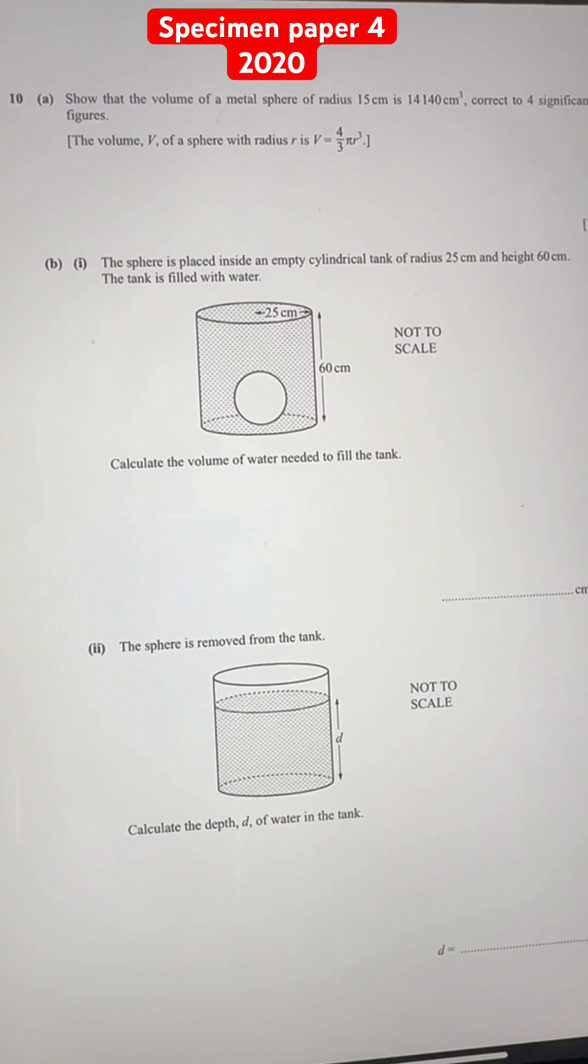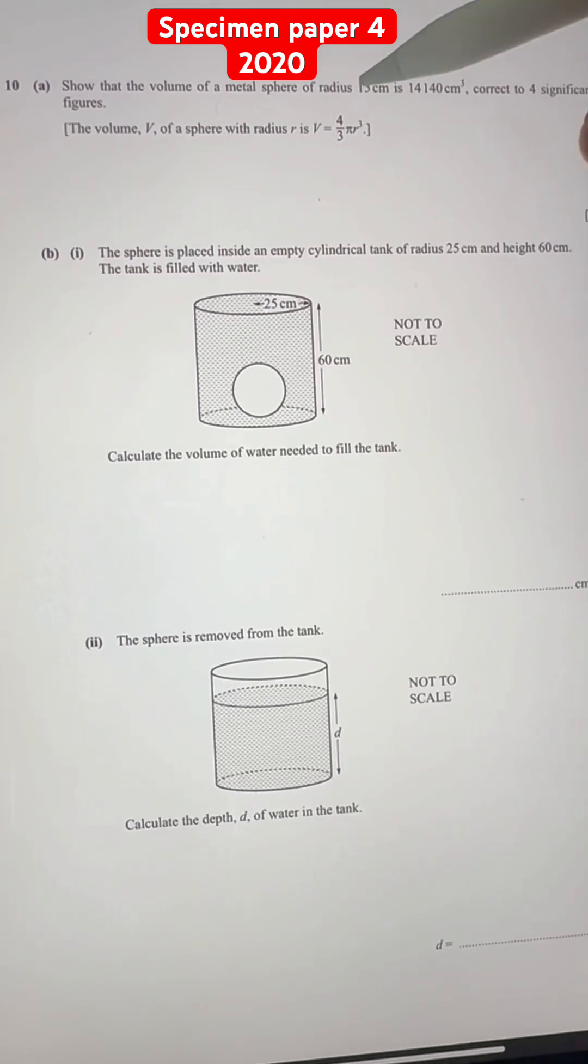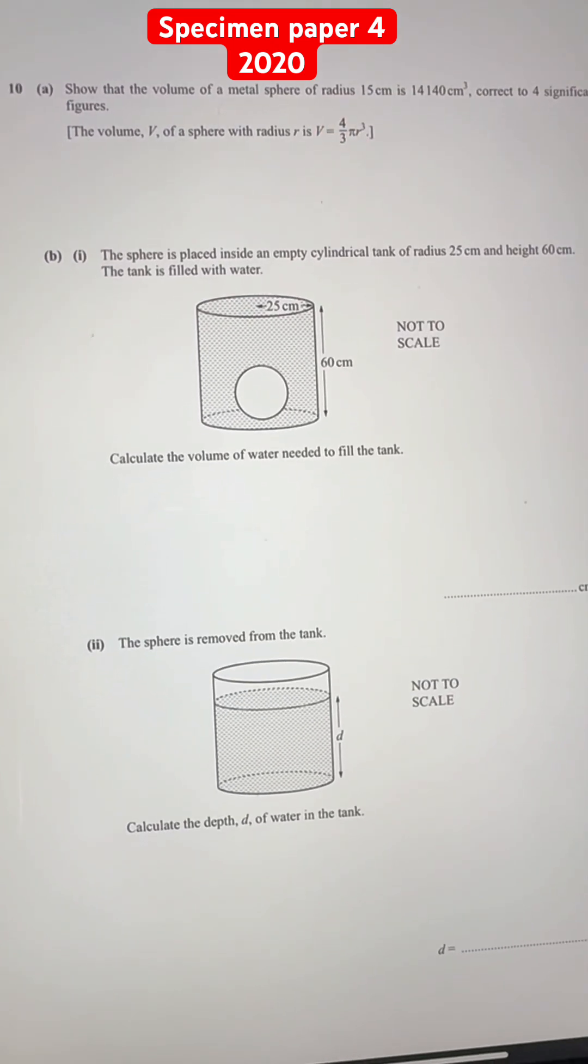Well, this is quite a straightforward question. We know the radius r, which is 15 cm. And we can just substitute r into this formula and we'll get the volume.